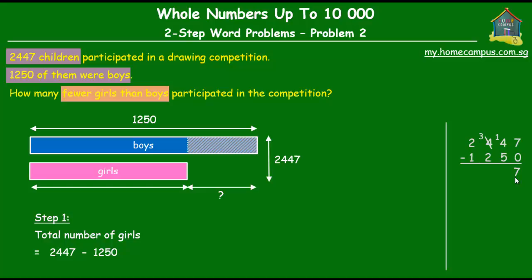Now we have 14 tens minus 5, which gives us 9 tens. Then 3 hundreds minus 2 hundreds is 100. And 2,000 minus 1,000 is 1,000. Now back to the model — this pink unit over here is equal to 1,197. So we know that there were 1,250 boys and 1,197 girls.